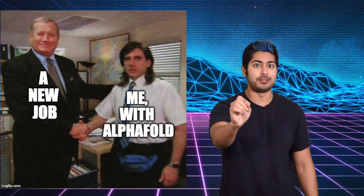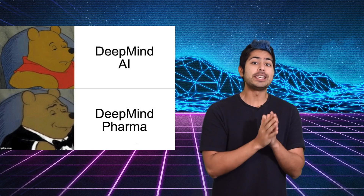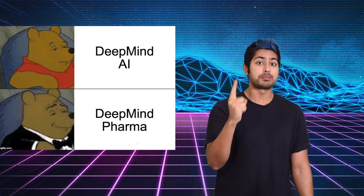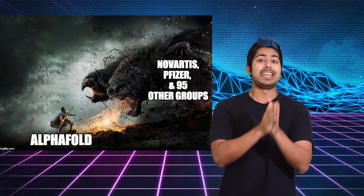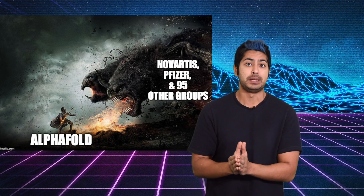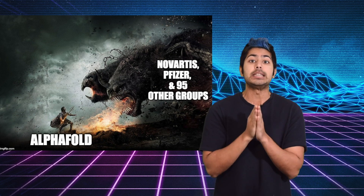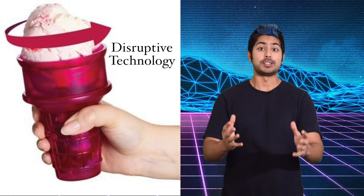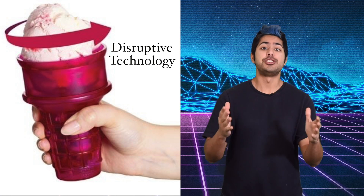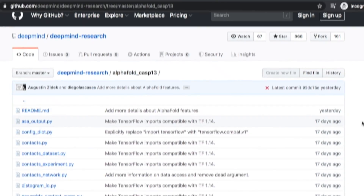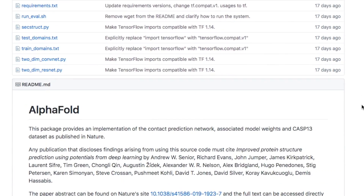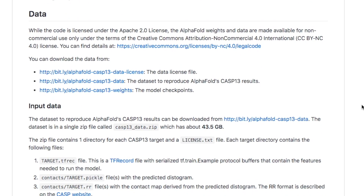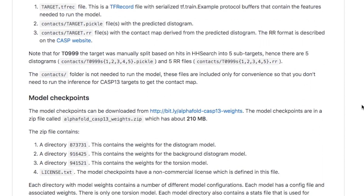That project will look very impressive on your portfolio, because using AlphaFold, DeepMind — a company with zero credentials in biochemistry — won first place by a large margin in a biannual protein folding competition called CASP, beating 97 other groups, including many billion-dollar pharmaceutical companies who've been working on this for years. AlphaFold, like the ice cream cone rotator, is the definition of disruptive technology. And since it was just made public, you now have this incredibly powerful tool to use for your own projects, or even to compete in the next CASP competition in a few months since it's open to anyone.